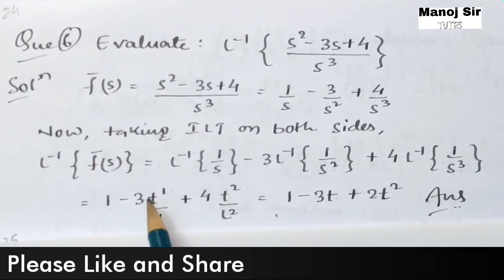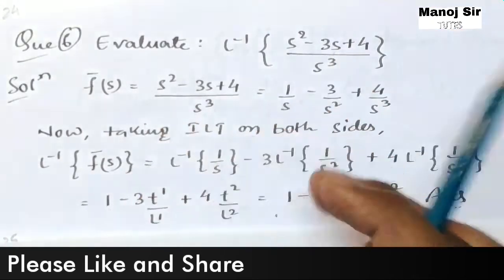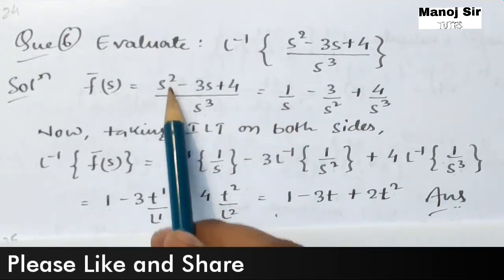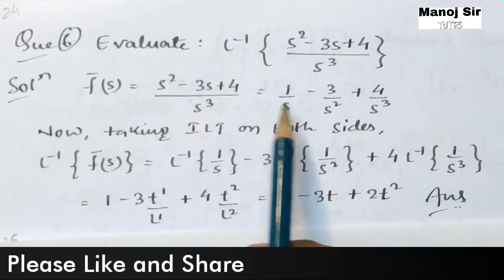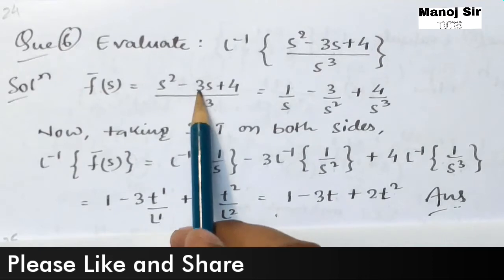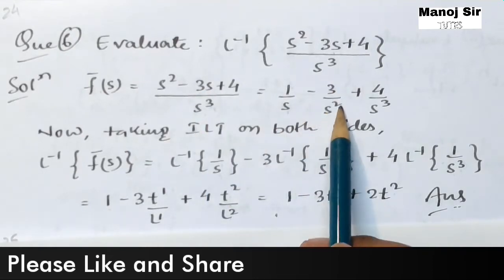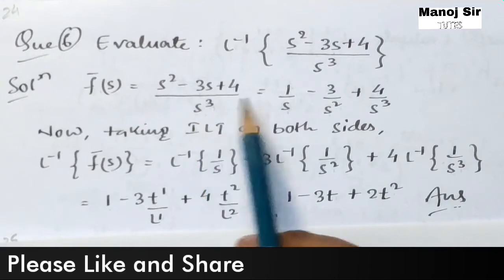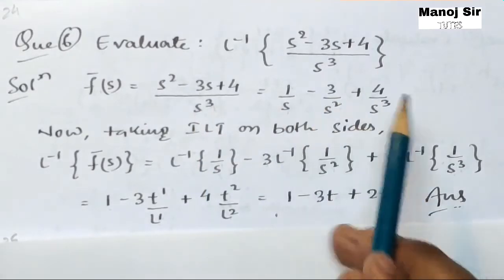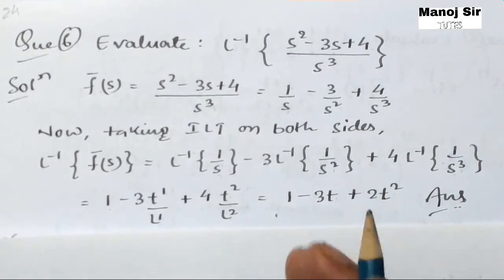We write f̄(s) = (s² - 3s + 4) / s³. Now we separate this into individual terms: s²/s³ = 1/s, then -3s/s³ = -3/s², and 4/s³ remains as it is. So we have three separate terms.